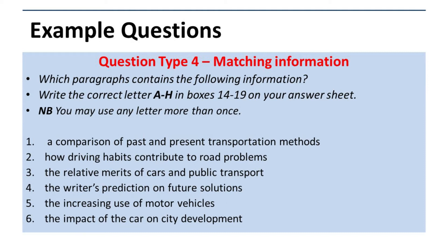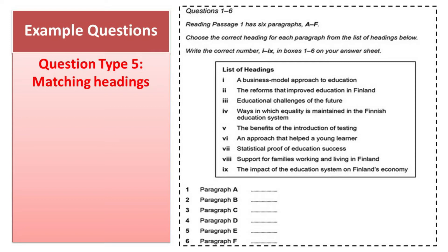Question type five is Matching Headings. We have a list of headings and a number of paragraphs. The given example has nine headings and six paragraphs. For each paragraph you need to find which heading is correct. Only six headings are correct; three are extra just to confuse you. For example, if heading Roman numeral V is correct, you write it in front of paragraph A.